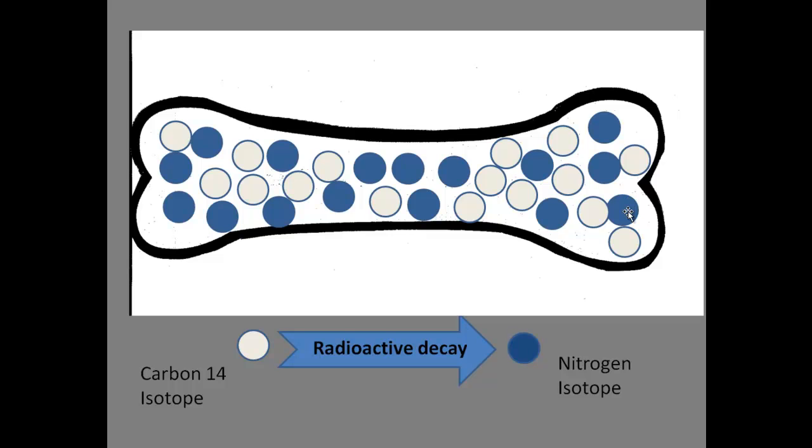And again, they don't go in and count them. They look at the percentages. So right here, it's about half. And if you actually did count these circles, you would see that there would be 16 white and 16 blue. And so it would be half carbon-14 and half nitrogen.